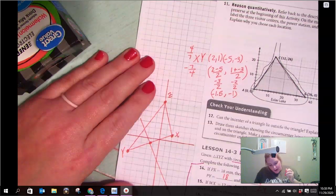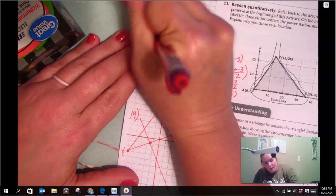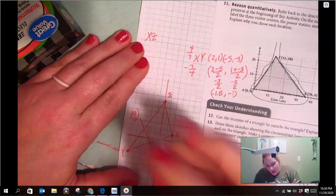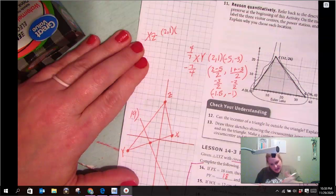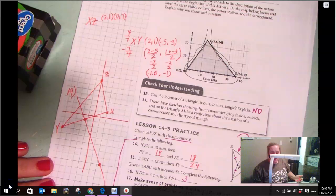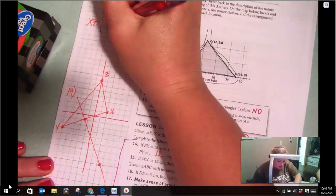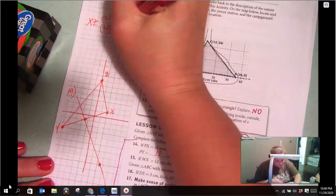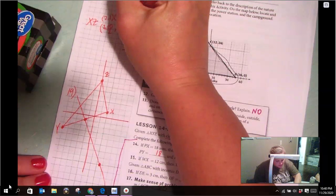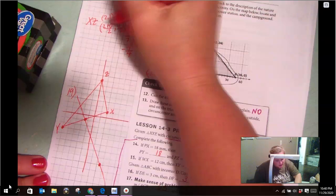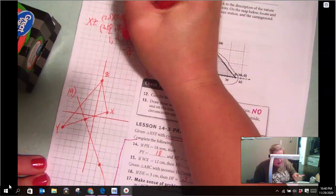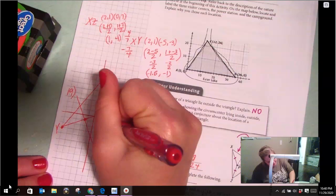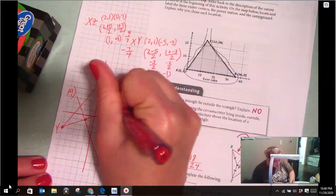Now, I'm going to go to XZ. X is at (2, 1), Z is at (0, 7). So, I need to find the midpoint. 2 plus 0 divided by 2, comma, 1 plus 7 divided by 2. So, 2 divided by 2 is 1, comma. 8 divided by 2 is 4. So, I'm looking for the ordered pair (1, 4). So that is my midpoint.